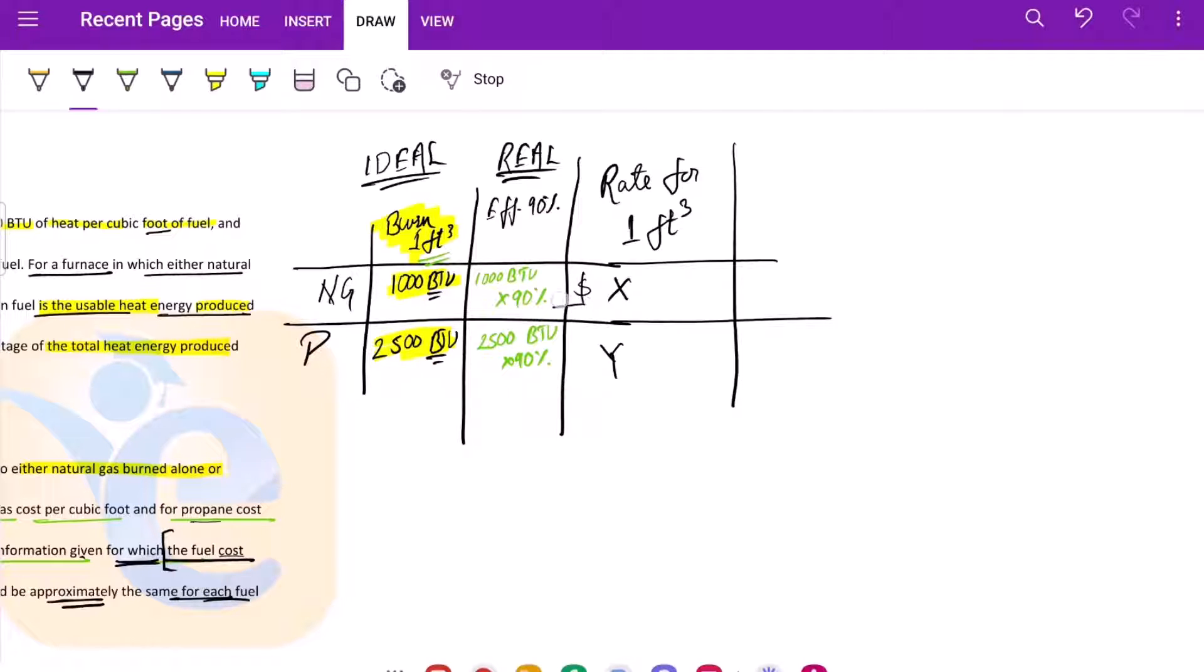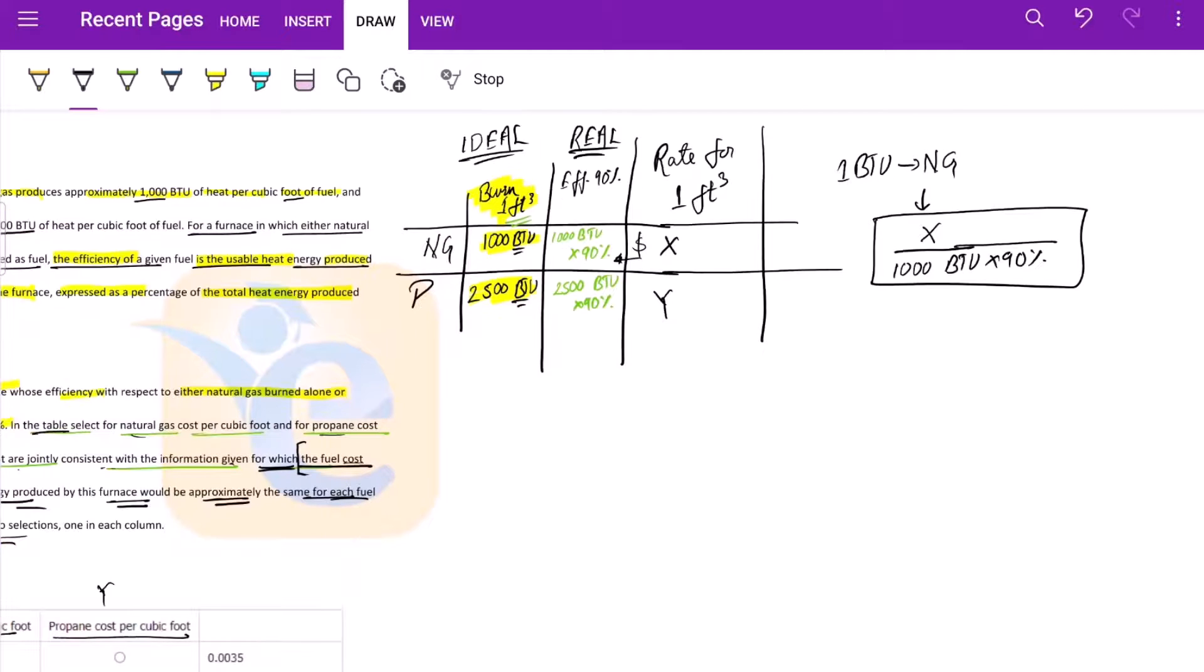So basically, say this is x dollars. In x dollars we're producing this much heat energy. So for one BTU of heat energy through natural gas, we would be needing x divided by 1000 BTU into 90%. So this would be the fuel cost per BTU.